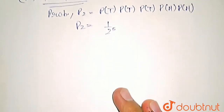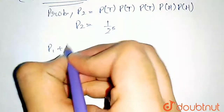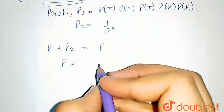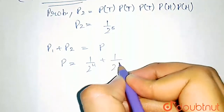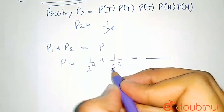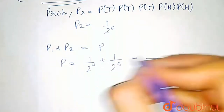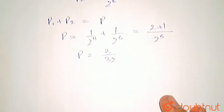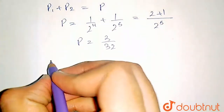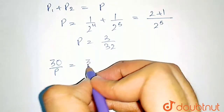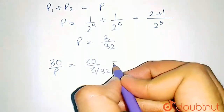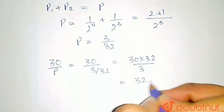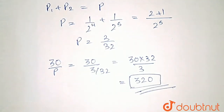The total probability is P1 plus P2. In the question it is given as P. So P equals 1 upon 2 raised to the power 4, plus 1 upon 2 raised to the power 5. Taking LCM as 2 raised to the power 5, we get 2 plus 1, so the value of P is 3 upon 32. Now, 30 divided by P equals 30 divided by 3/32, which equals 30 times 32 divided by 3, giving us 320. This is the required answer.